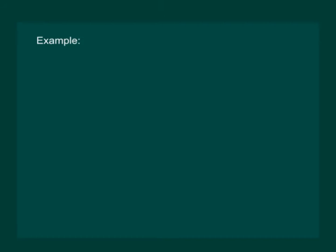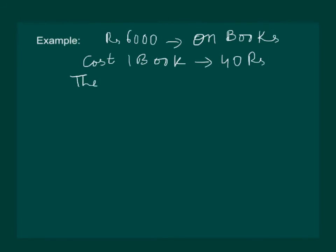To understand the concept even better, let us take an example. A school wants to spend Rs. 6000 on books. Now, let us consider that if one book cost Rs. 40, then how many books can we purchase? If the cost of one book is Rs. 40, then we can buy 6000 by 40, equal to 150.